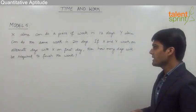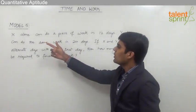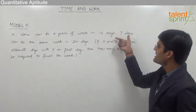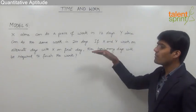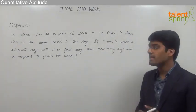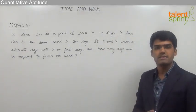So that's a very simple question where X alone can do the work in 12 days and Y alone will do the same work in 24 days. Now here we find that X and Y are working on alternate days starting with X on the first day.